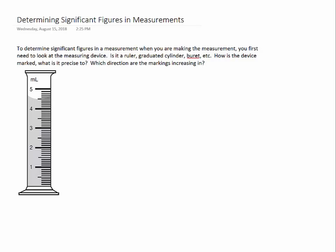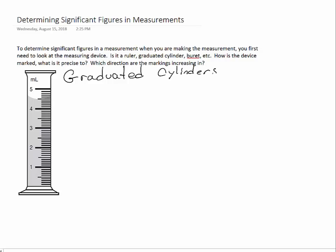This is a video for Chem 1211 at Augusta University on how to determine significant figures in measurements. To determine significant figures from a measurement you are making, one of the most important things is what device you're using. Looking at the device you're using, what kind of device is it? The devices we're going to look at are called graduated cylinders, and you need to look at how these instruments are marked.